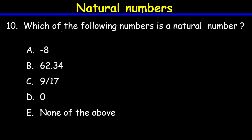Question number ten: which of the following numbers are natural numbers? Negative 8 is not a natural number because natural numbers do not include negative numbers. 62.34 is not a natural number because it is a decimal. 9 over 17 is not a natural number because it is a fraction. 0 is not a natural number. Therefore choice A — none of the above — is correct, because all of the listed numbers are not natural numbers.